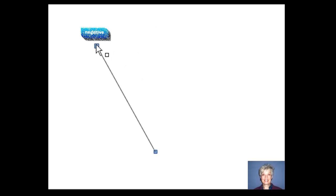Negative slope for a line leaning to the left. And positive slope for a line leaning to the right.